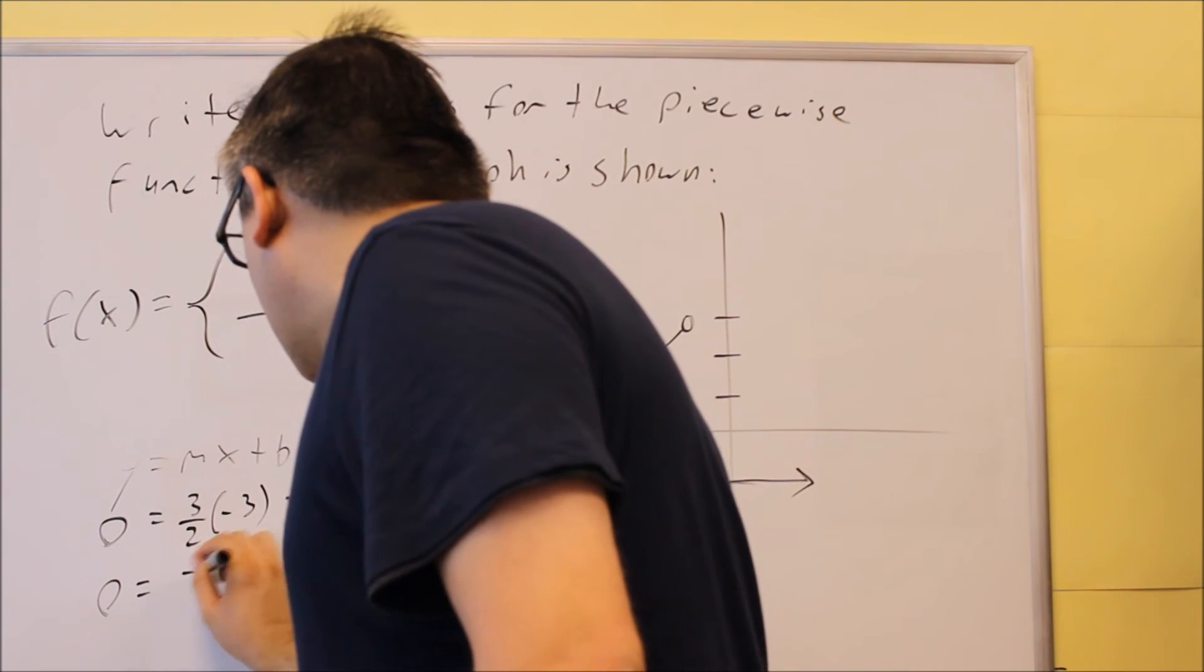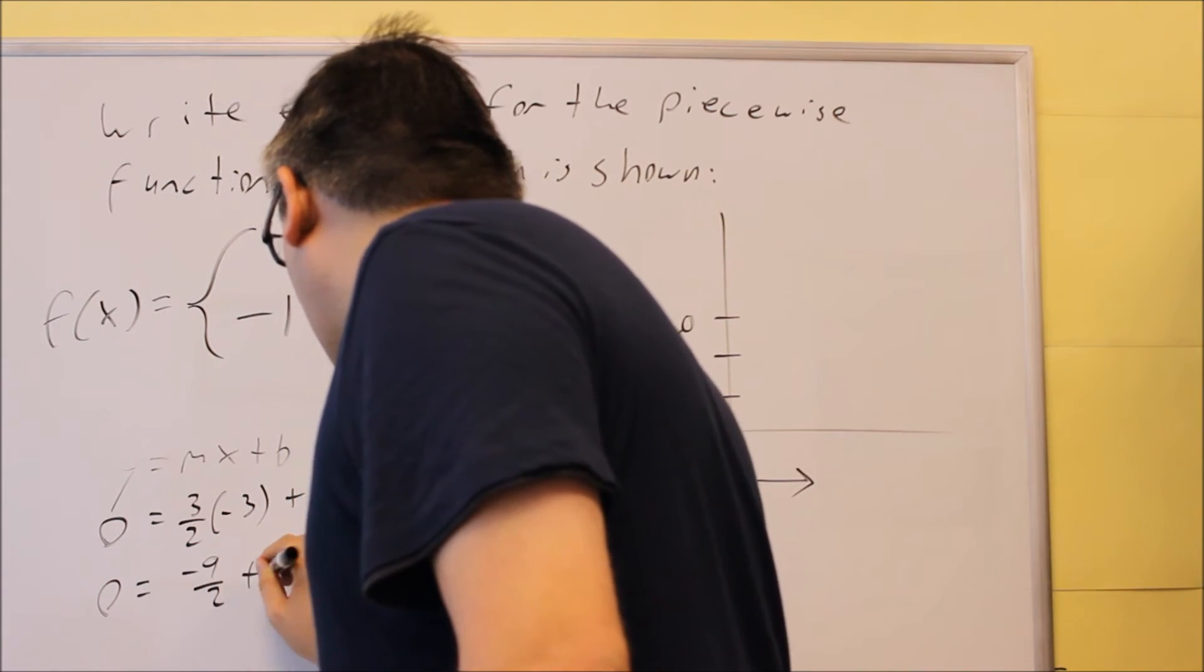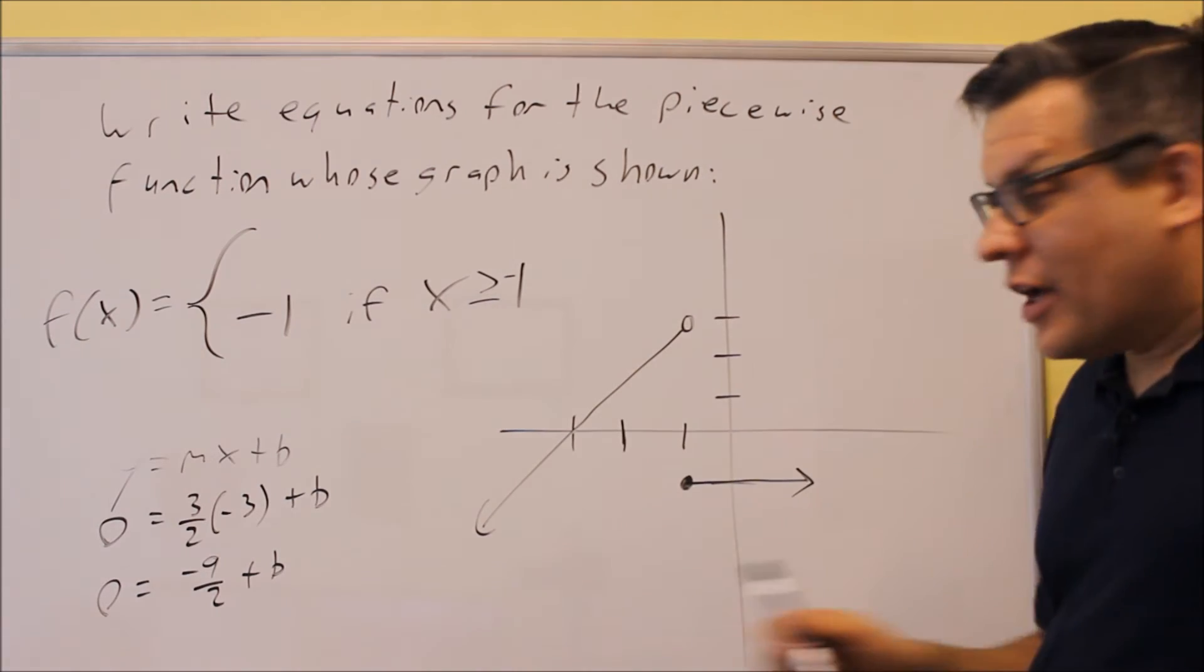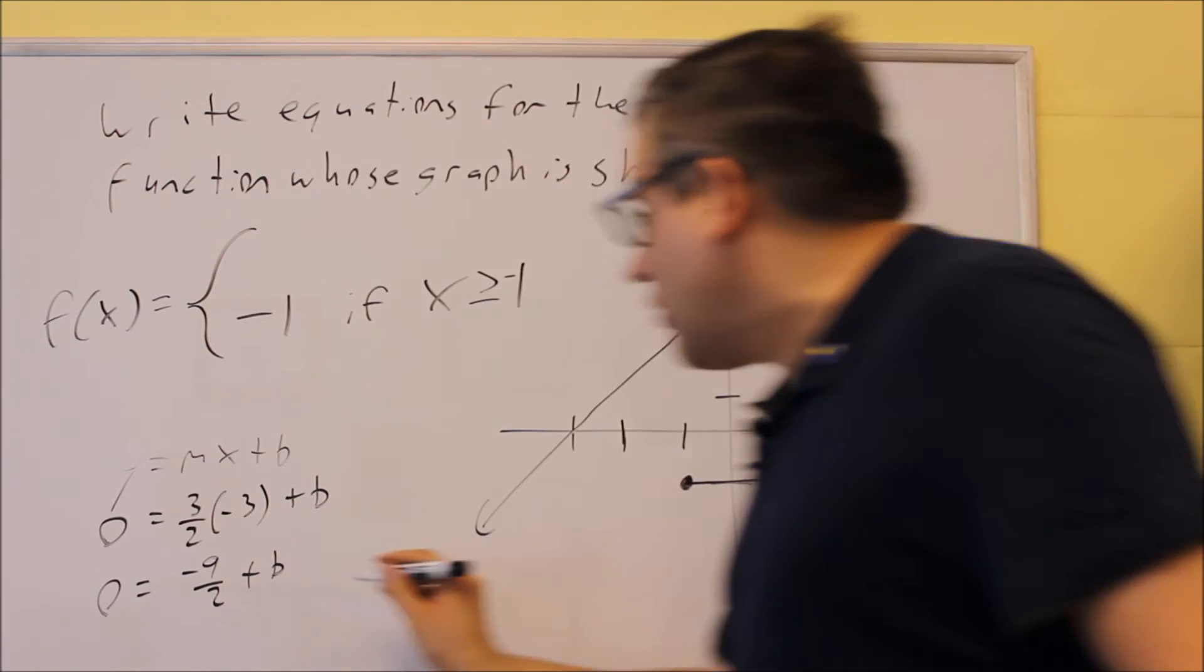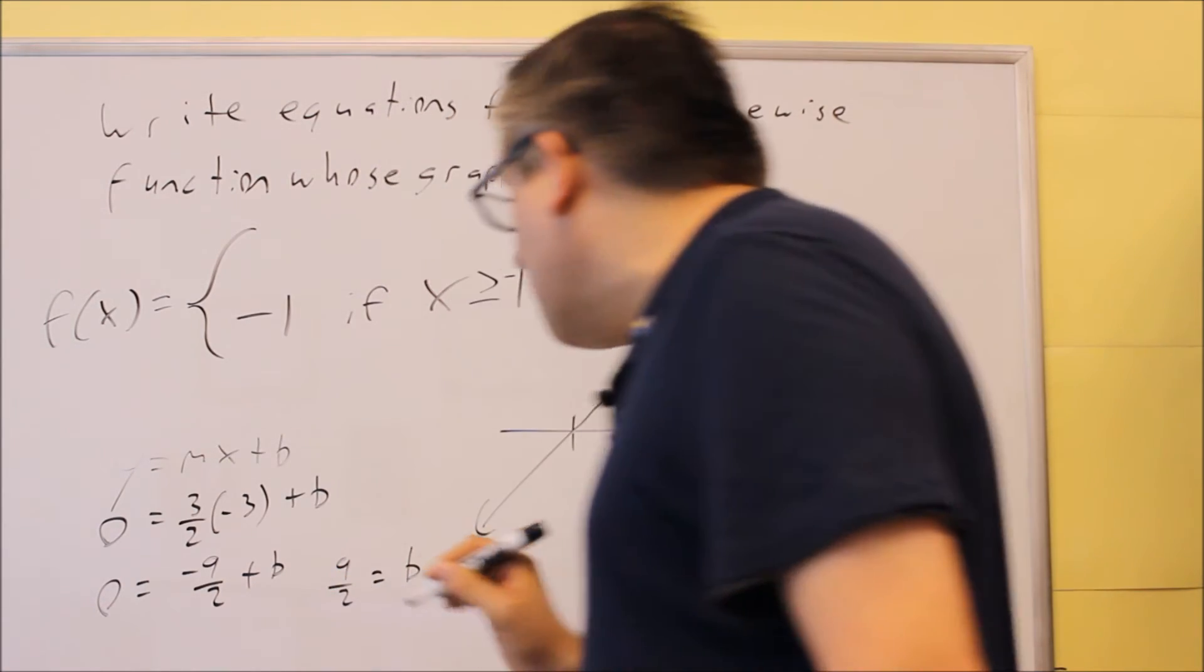So I have 0 equals, that's negative 9 halves when I multiply that, because it's negative 3 over 1 when I multiply it. When I solve, I get 9 halves equals b.